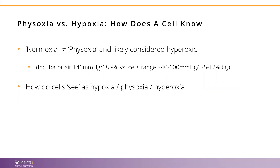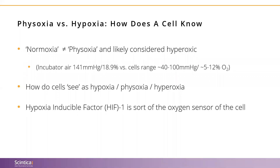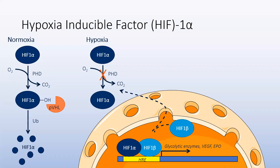The real question is how do cells see hypoxia, physoxia, and hyperoxia? For this, we use the cell's natural oxygen sensor, the hypoxia inducible factor, or HIF for short. Looking at two separate oxygen scenarios: in a high oxygen environment, HIF becomes labeled for degradation and is degraded in the cytoplasm. In a lower oxygen environment, HIF is not degraded and is inevitably brought back into the nucleus as an activator of transcription.